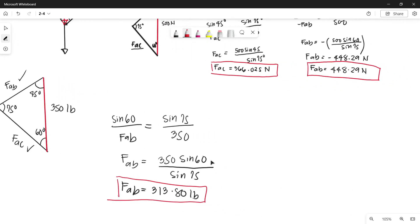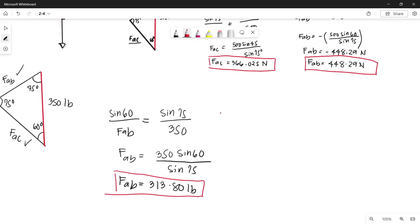Now let us get the value of the magnitude of our force AC. So the opposite angle of our side AC is 45. So let's use sine 45 over its opposite side force AC is equal to sine 75 over its opposite side 350. So force AC is equals to 350 sine 45 over sine 75.